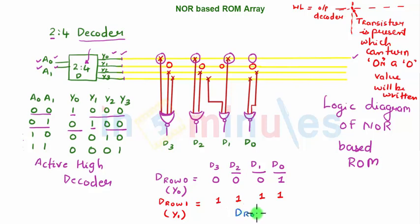row. See data for row 2, that is y2. Let's do this: d3, d2, d1, d0. So let's see y2—yes present, y2 present, y2 not present, y2 present. So d3 is present, so it's a 0. For d2 it's present, so again it's a 0. For d1 it's not present, so it's a 1. And for d0 it's present,